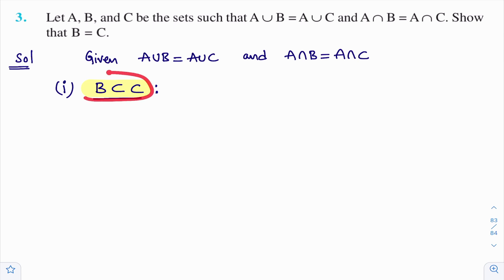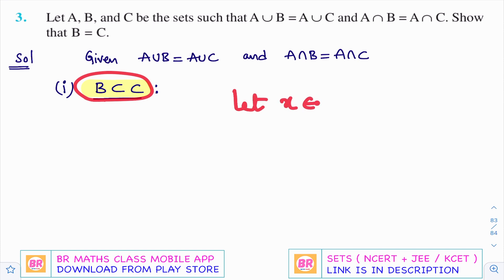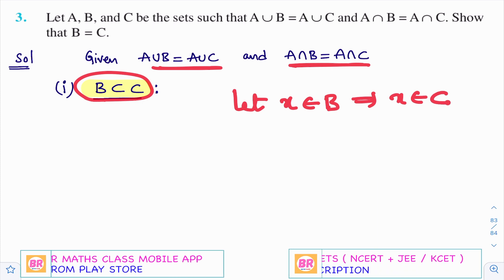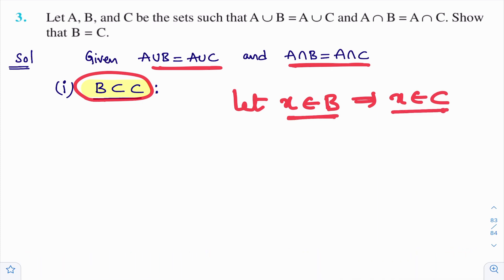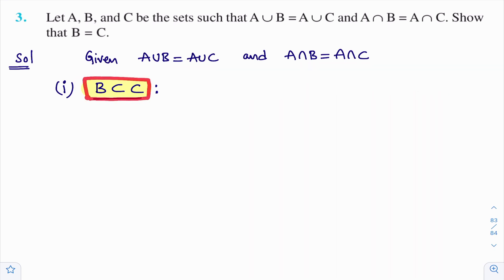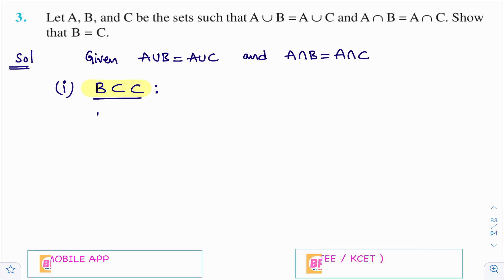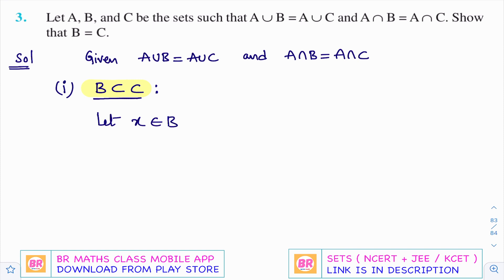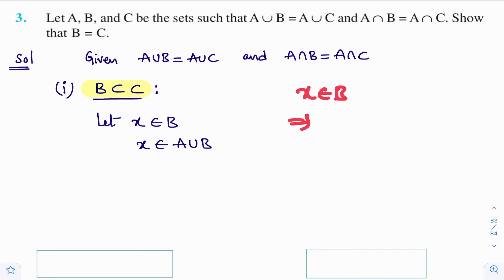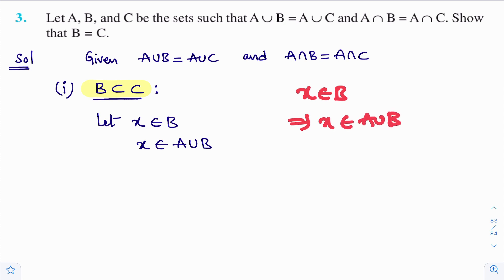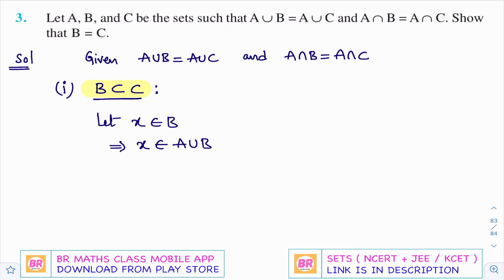How to prove that B is a subset of C? Very simple. I'll take one random element X in set B. By using the two given conditions I'll prove that X is also in set C. If all elements present in set B are present in set C, then I can say that B is a subset of C. So let X belong to set B.